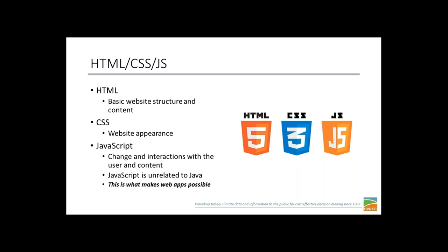Bundled up with HTML is also CSS, or Cascading Style Sheets, which sets the style of the website. You're taking your plain HTML and setting background colors, adjusting font sizes — basically taking your basic structure and turning it into something pretty. You can set the size of your ACIS Climate Summary Map, tell it to center itself, make sure other maps are in line. All of CSS is based around adjusting the way your HTML looks.